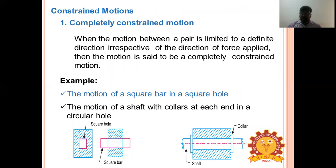Constrained motion is classified into three types: completely constrained motion, incompletely constrained motion, and successfully constrained motion. In completely constrained motion, the motion between a pair is limited to a definite direction. Example: a square bar moving in a square hole — only reciprocating/sliding motion is possible, no rotary motion.